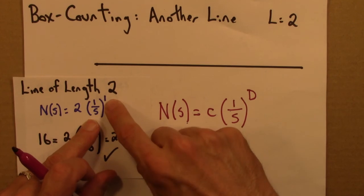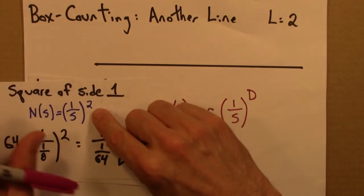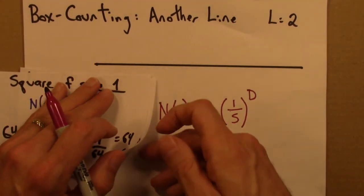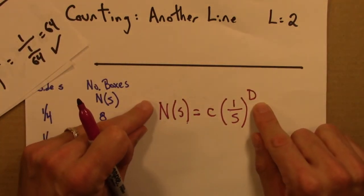If it's one-dimensional, we need to raise it to the first power. And if it's two-dimensional, like the square, we need to raise it to the second power. So this is moving us towards the definition for the box-counting dimension.